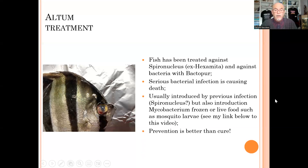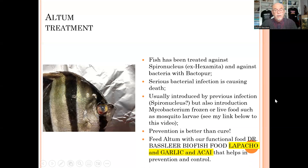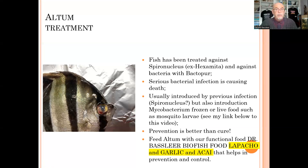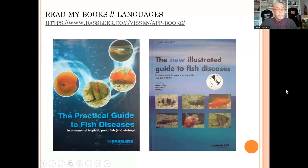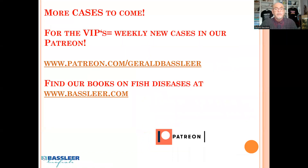Prevention is better than cure, so think about feeding good food. That is why we recommend feeding functional foods like lapacho, our great food, seed extract, and moringa — these help in the control and repair of this kind of infection. Of course you also have to use a good antibiotic or antibacterial treatment, which you must try to get from your pet shop or fish doctor. You can learn more in my books on fish diseases available at our website in different languages, or in my Patreon channel.